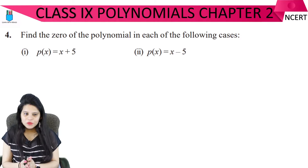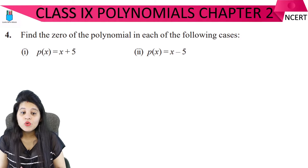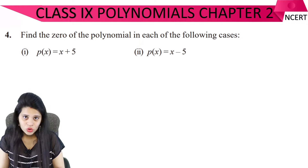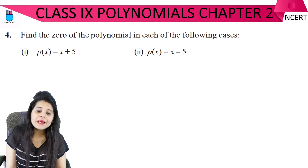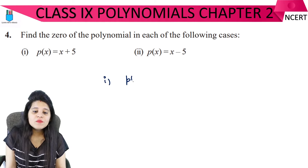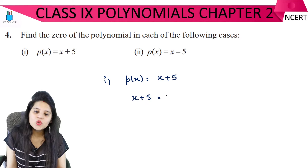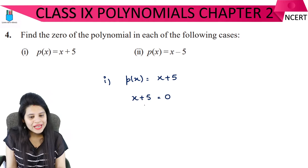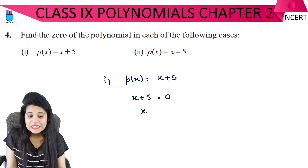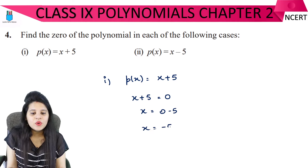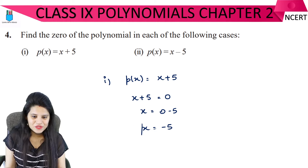Now let's get to question number 4: find the zero of the polynomial in each of the following cases. For the first part, the polynomial is x plus 5. Simply set x plus 5 equal to 0. Solving for x, we move the plus 5 to the other side, so x equals minus 5.